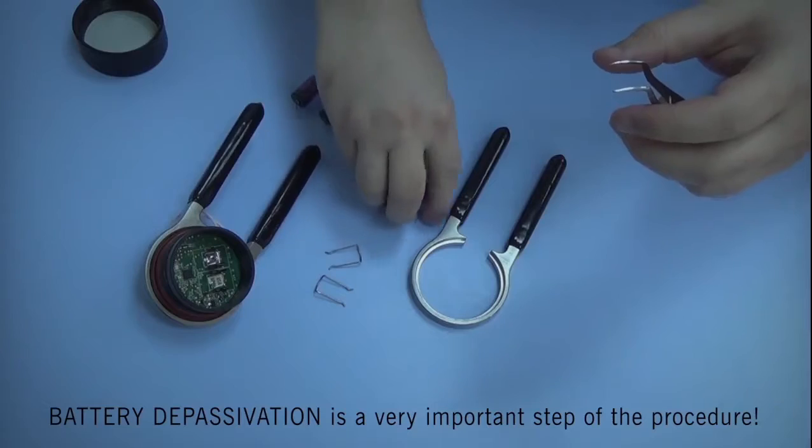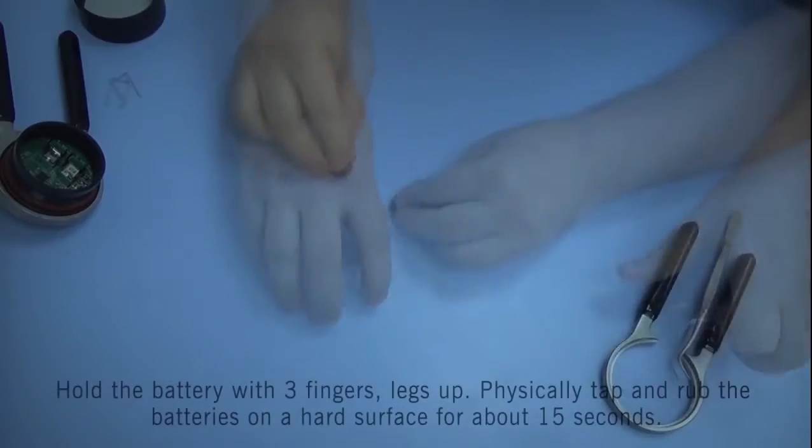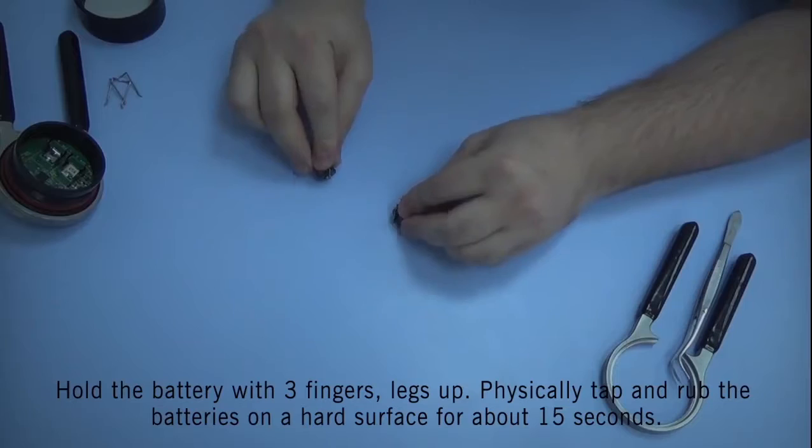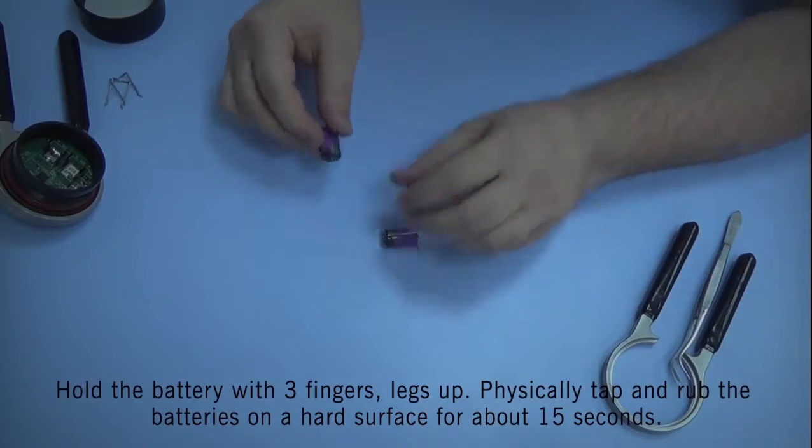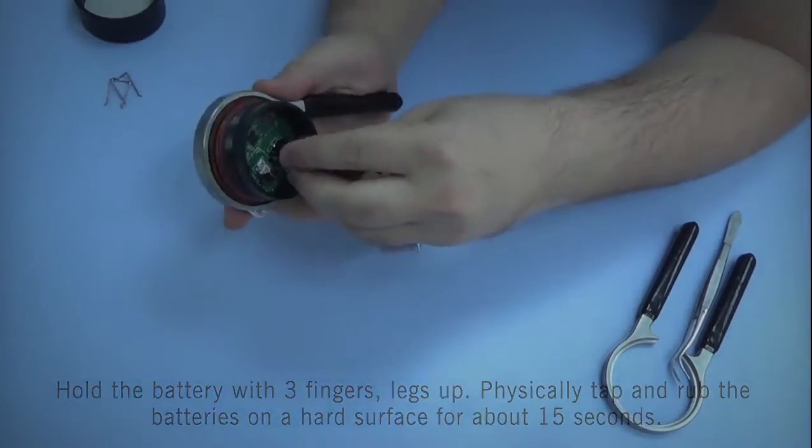Battery depassivation is a very important step in the process. You may do this by holding the battery with three fingers and the legs up while physically tapping and rubbing the battery against a hard surface for about 15 seconds.